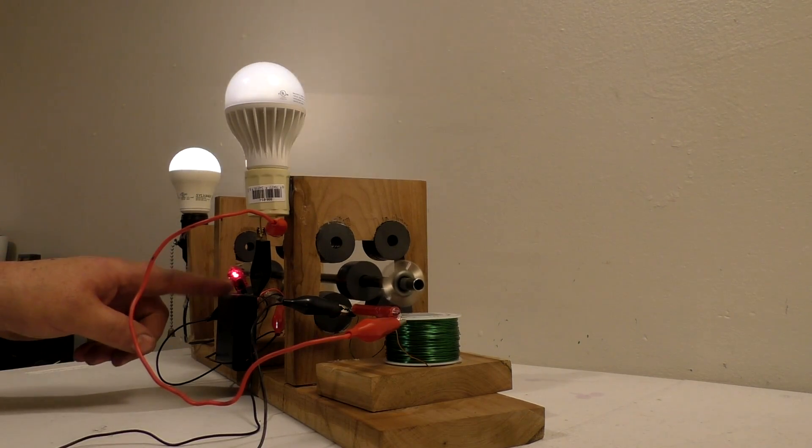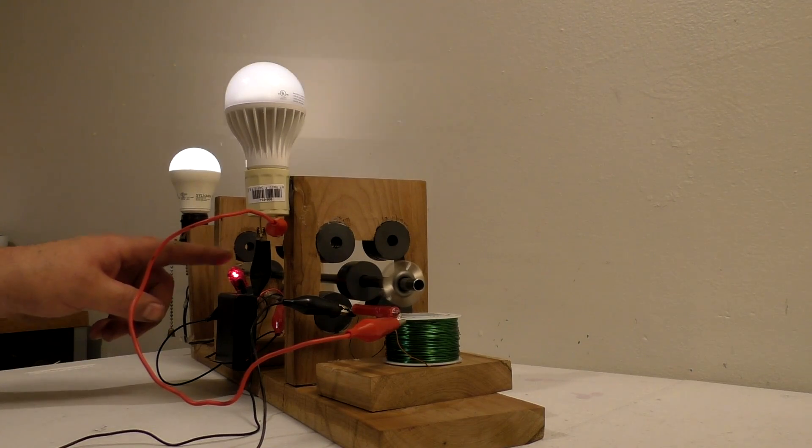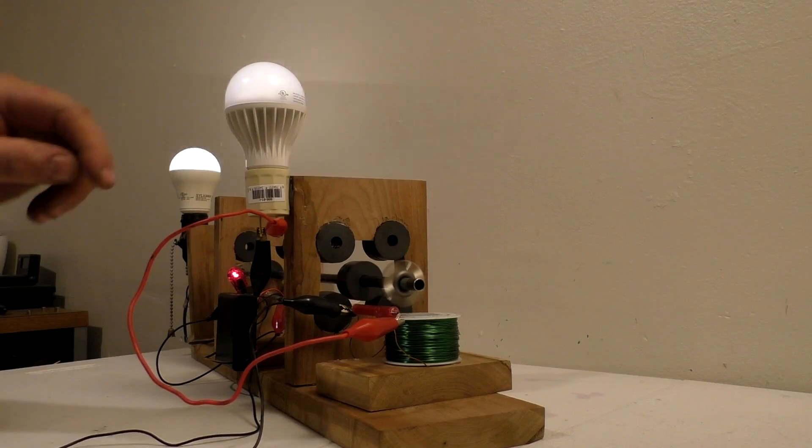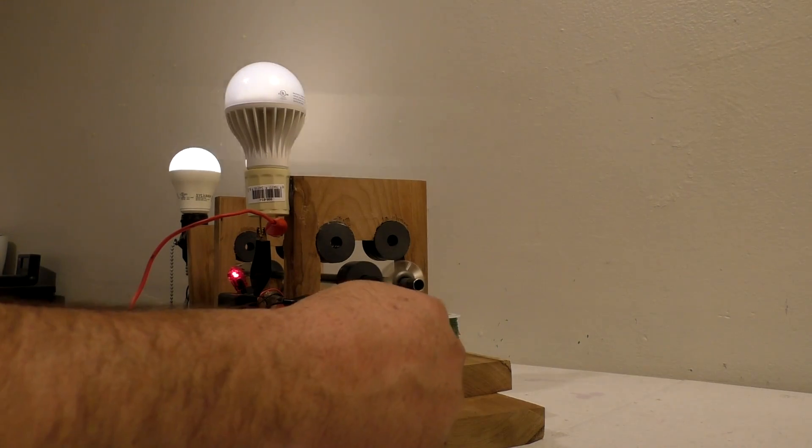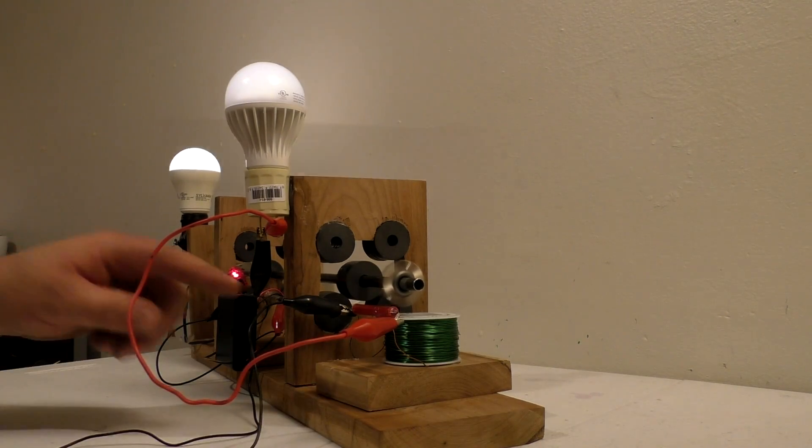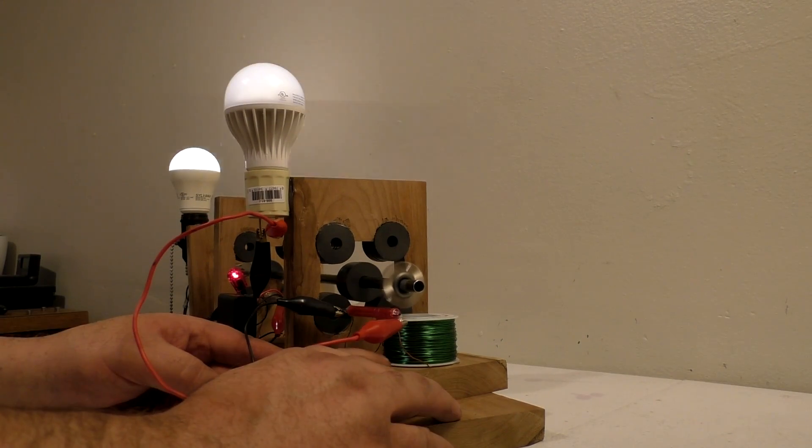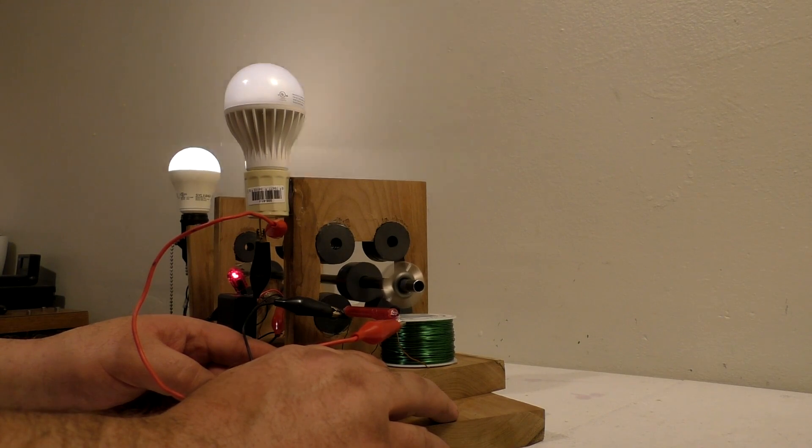Basically, I've got four AA batteries right here running a 12-volt LED and a 110-volt light. And then just some copper winding for that magnet wire going through the reed switch. You can power another 110-volt.